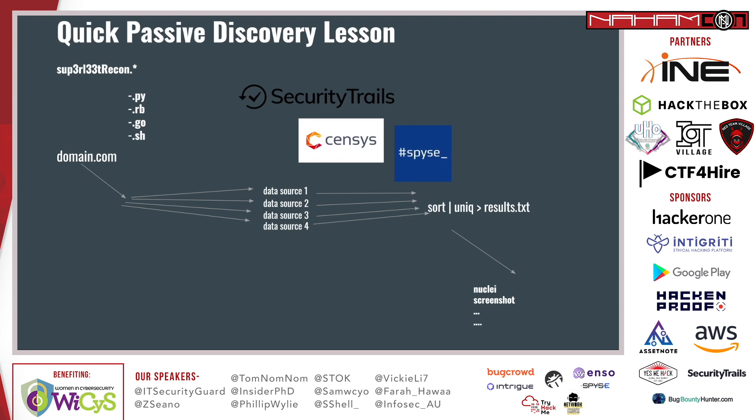There are quite some scripts out there that do exactly that — they query those passive discovery sources. The tools they use work as follows: you have your recon tool and you feed it with the domain. The tool then goes and gets all the data from the data sources, sorts them, uniques them, and prints out the results so you can use them further.